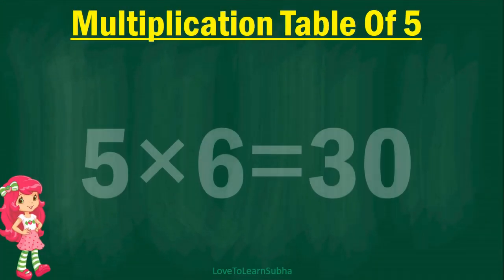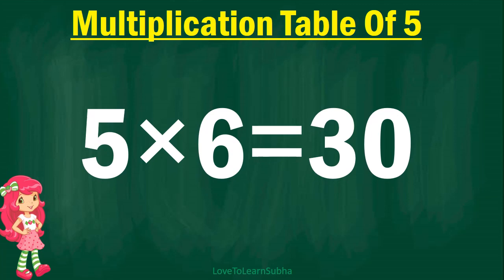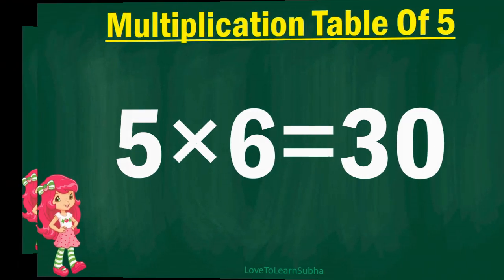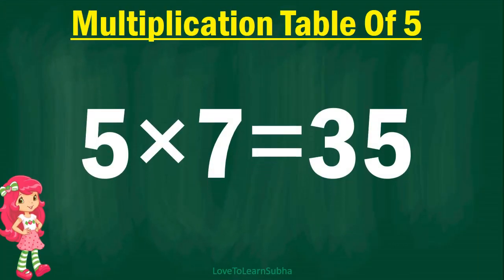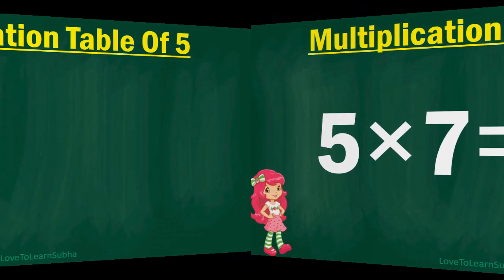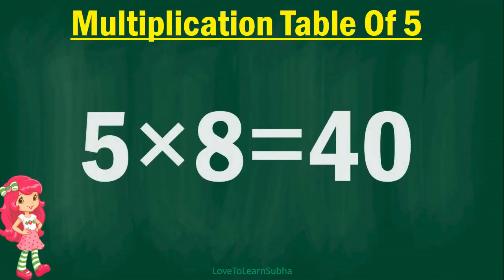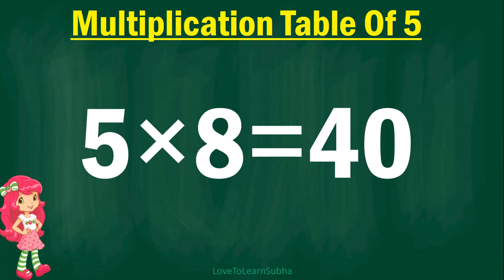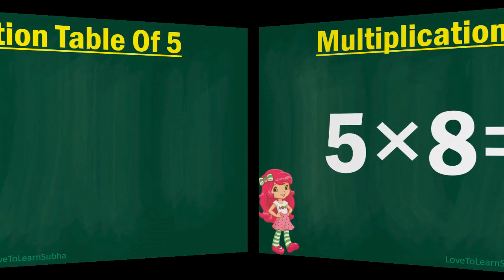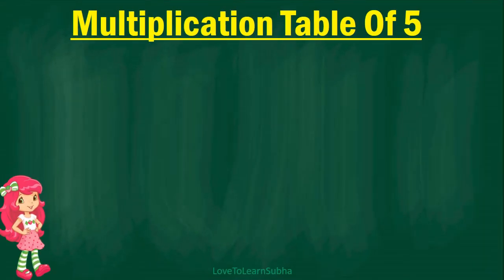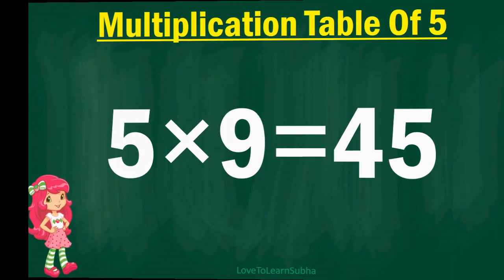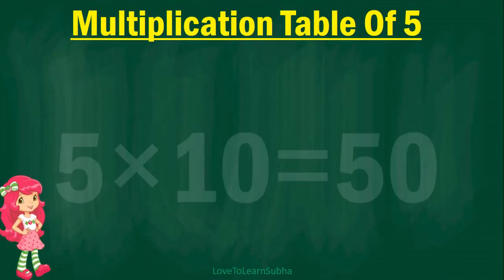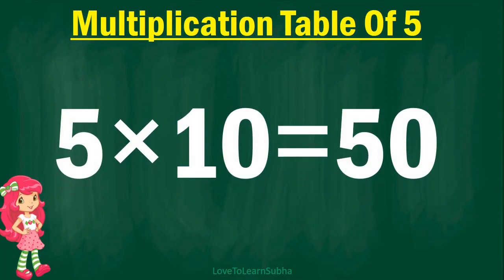5 6's are 30. 5 7's are 35. 5 8's are 40. 5 9's are 45. 5 10's are 50.